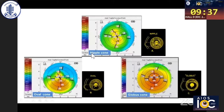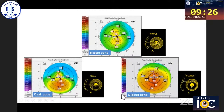Based on the location of the cone, it can be a nipple cone, which is in the central area, small and usually steeper. Then the oval cone is usually larger and inferiorly placed, as you can see in this topography picture. The globus cone involves more than 75 percent of the cornea. These are the three morphological shapes of the cornea which we use in fitting contact lenses in keratoconus.